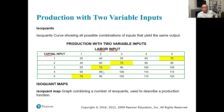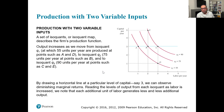The isoquant is the same concept as the indifference curve. In the indifference curve, utility is fixed; here the output is fixed — like 75, 75, 75 — for different combinations of two inputs. So we can plot these. The red lines are isoquants. A set of isoquants or an isoquant map describes the firm's production function.